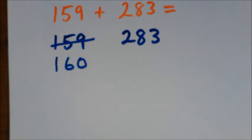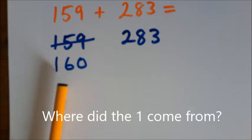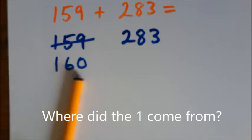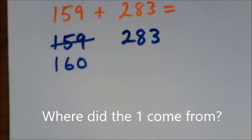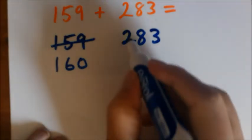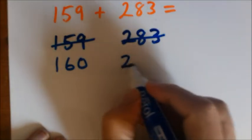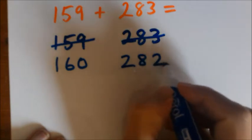Yes, we rounded the first number up and we had to get an extra one from somewhere. 159 plus one makes 160. Where did that one come from? The only place it can come from is the other number. So we have to adjust that now because it's lost one. Instead of being 283, it's lost one and gone down to 282.